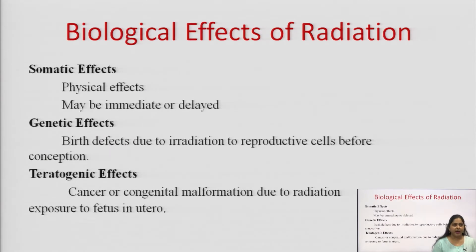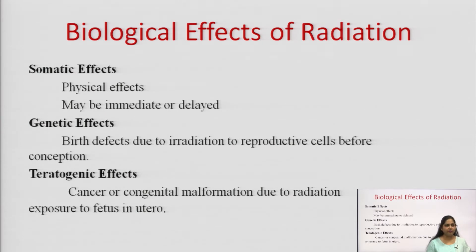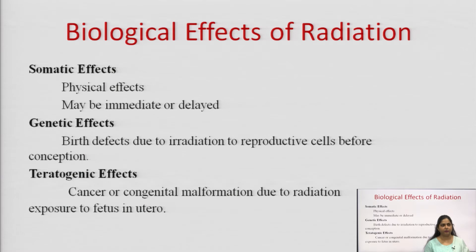The biological effects of radiation can be divided into three categories. First is somatic effects — these affect the cells and have physical effects such as cell damage; for example, hair loss can occur due to high radiation exposure. These effects can be immediate or delayed.